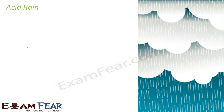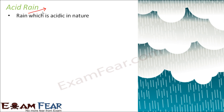Rain is formed when clouds precipitate and water droplets fall from them. When this rain is acidic in nature — due to the presence of acids like sulfuric acid, nitric acid, and sulfurous acid — we call it acid rain. Normal rainfall is not harmful, but rain containing such poisonous acids becomes harmful.